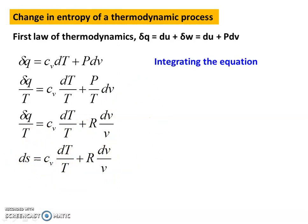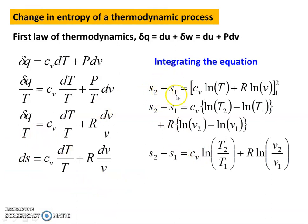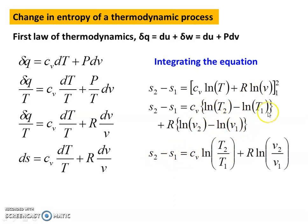Integrating the equation, the left-hand side gives s2 - s1. The right-hand side: Cv times the integral of dT/T is logarithmic of T, and R times the integral of dv/V is logarithmic of V. So, s2 - s1 = Cv ln(T2/T1) + R ln(V2/V1). This is the first equation to calculate the change in entropy.